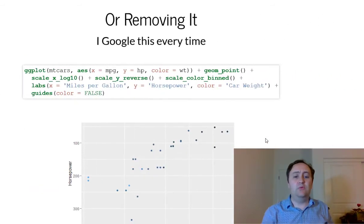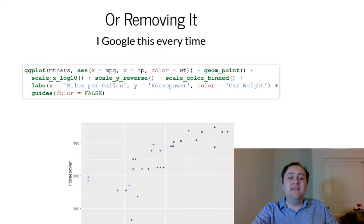The other thing to do is removing a legend, which is hard to remember, but you can do it with the guides function. I don't know why it's not just in the labels function, in the labs function, but it's not. If you want to remove a legend, you use the guides function, and you take the legend that you want to remove, and you set it equal to false. So if I want to take out the color legend, I do guides color equals false.